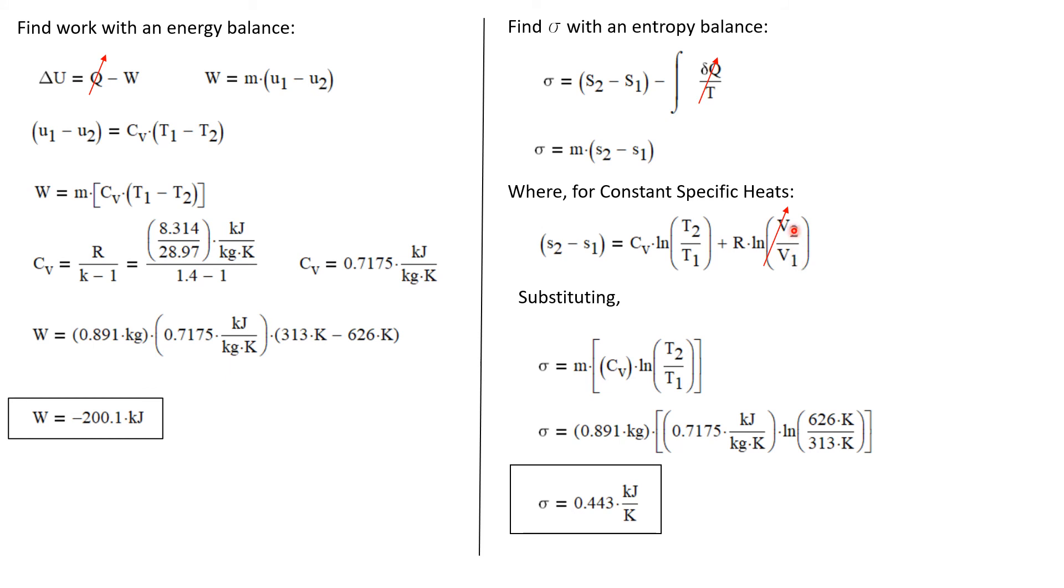But this is a constant volume process. So V2 is equal to V1. This term becomes zero. So substituting now we have that the entropy production is simply the mass times C sub V times the natural log of T2 over T1. We have already got the mass as 0.891 kilograms. We have a value for C sub V. And we have the natural log of 626 Kelvin over 313 Kelvin. We get the entropy production during this process is 0.443 kilojoules per kilogram.